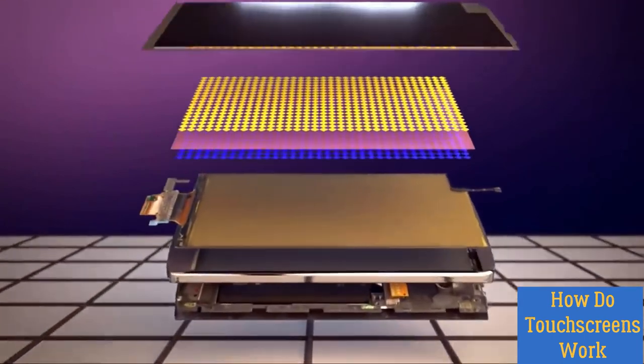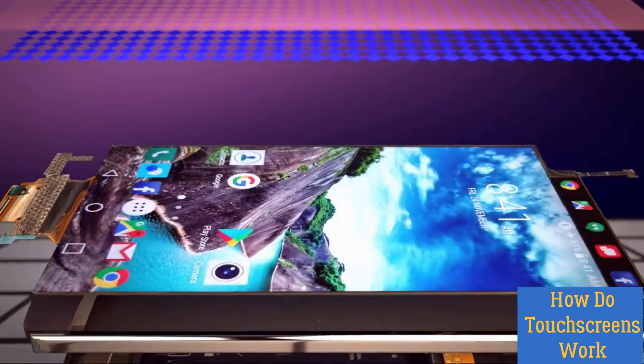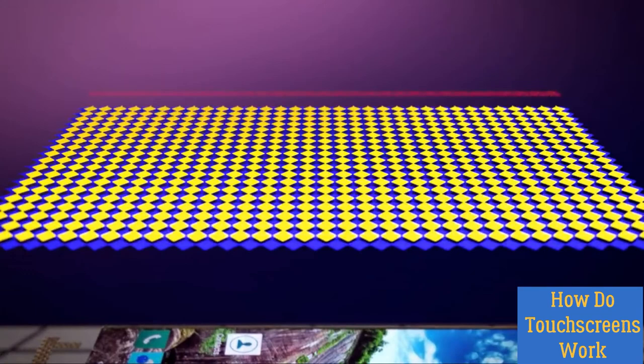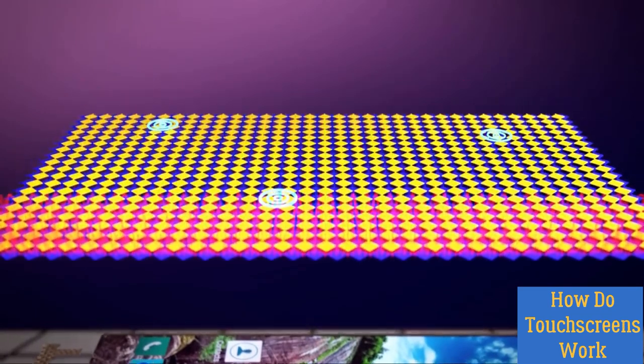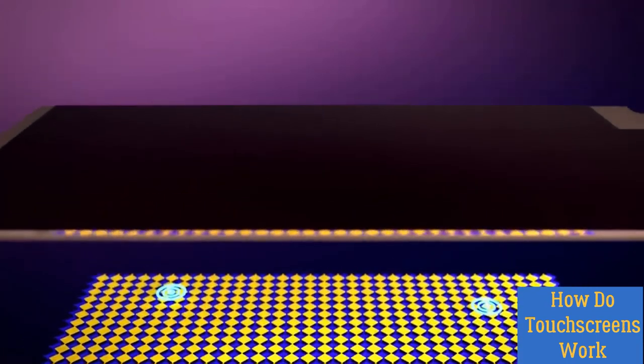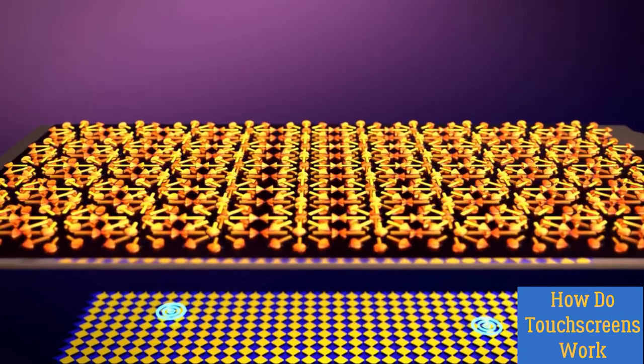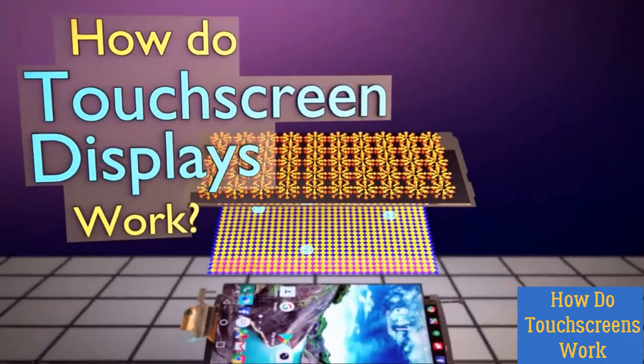So let's summarize. On the bottom is an OLED display composed of up to 10 million itty-bitty little colored lights. On top of that is a transparent projected capacitive touchscreen that can sense one or multiple touches at a time. And on top of that is strengthened glass that protects your screen from scratches and most falls. Now you, too, are a touchscreen expert.